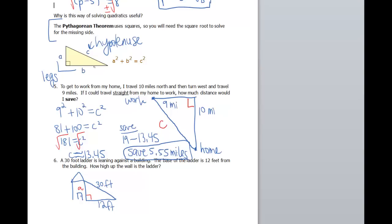I'm calling that missing distance A. You could call it B, doesn't really matter. So A squared plus 12 squared equals 30 squared. Got an extra zero in there.